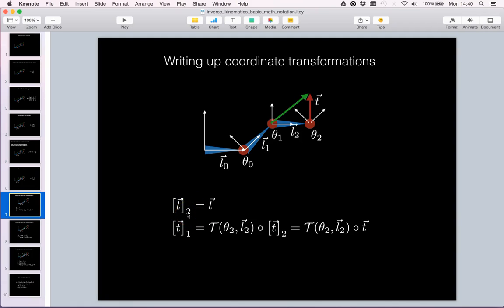So to get the red arrow with respect to link coordinate frame 1 we need to transform it by theta 2 and L2 to get T with respect to link frame 1. That is T with respect to 1 would be equal to the transformation given by L2 and theta 2 applied to T with respect to frame 2.